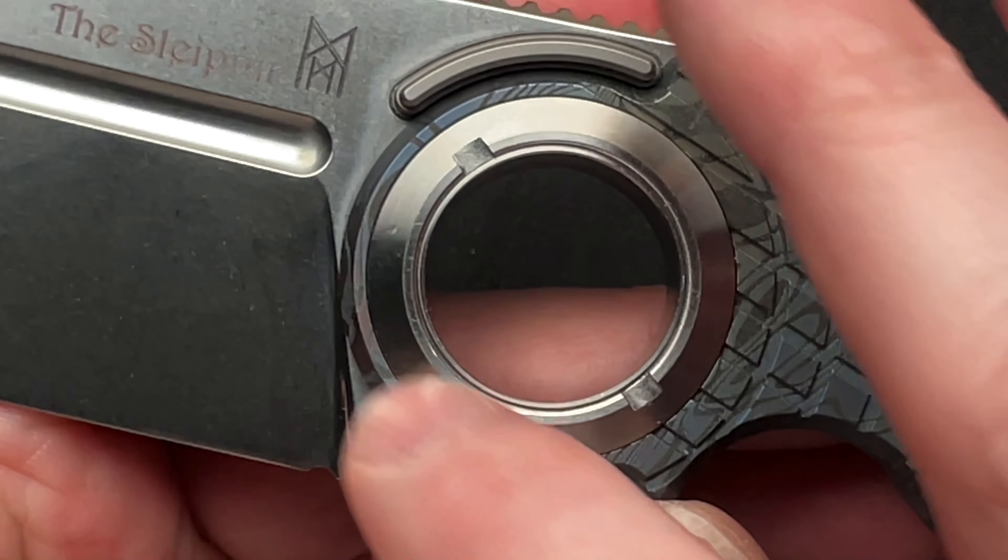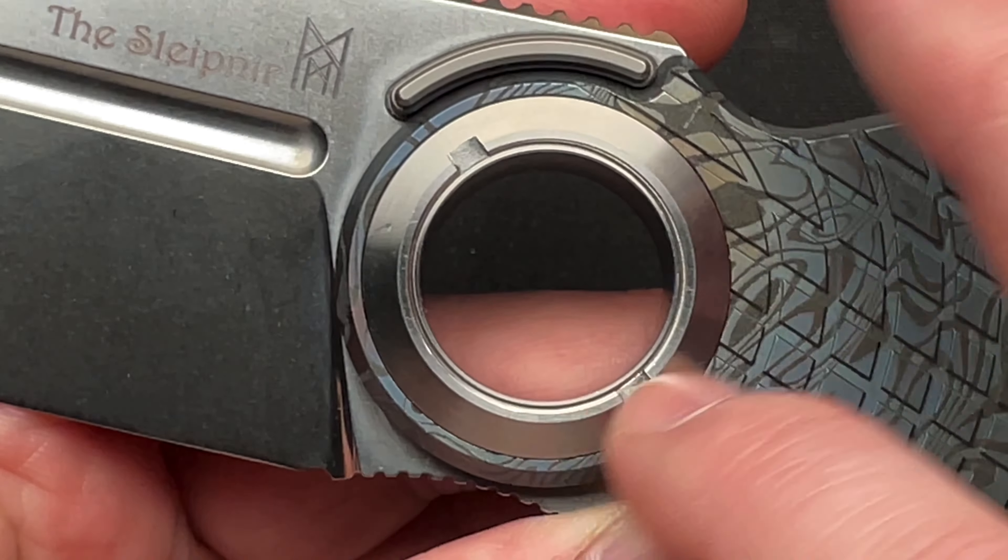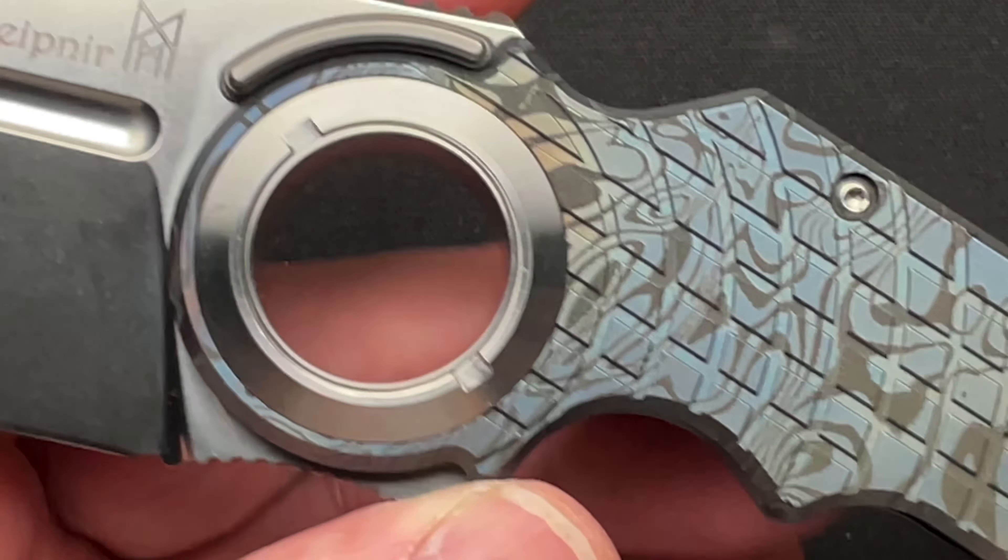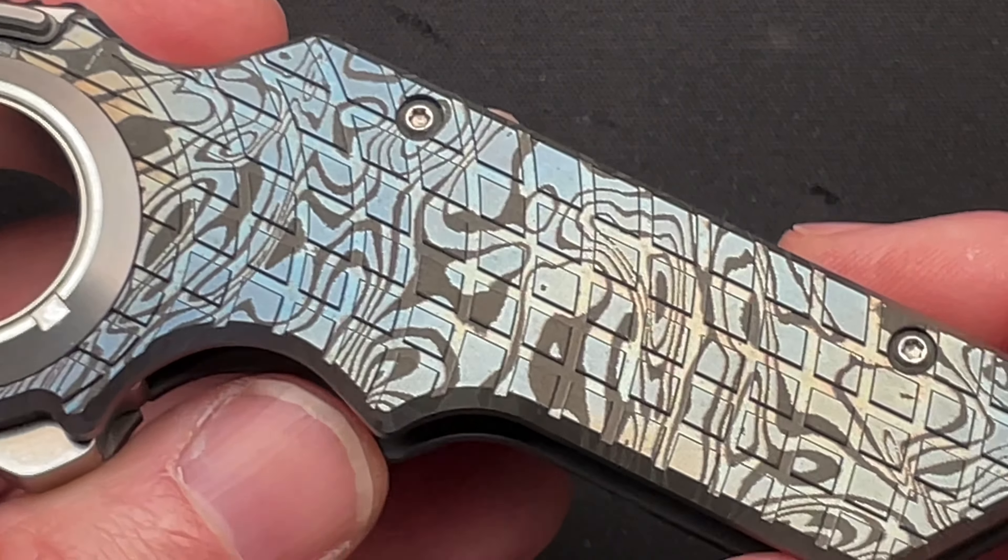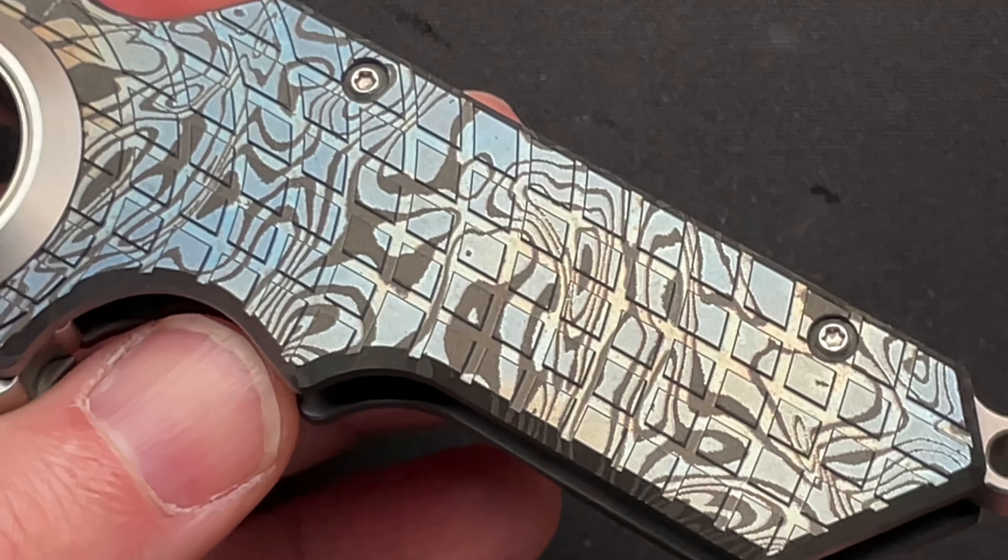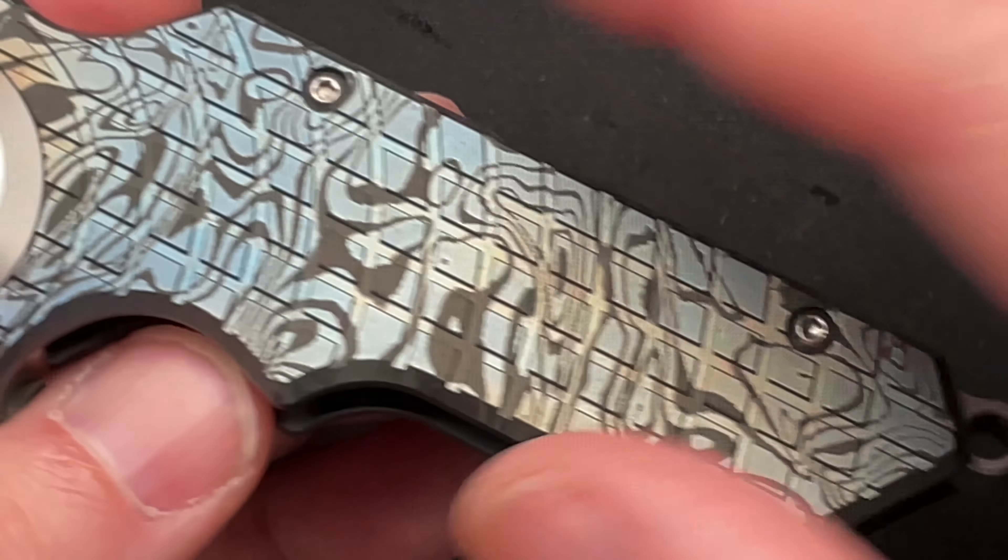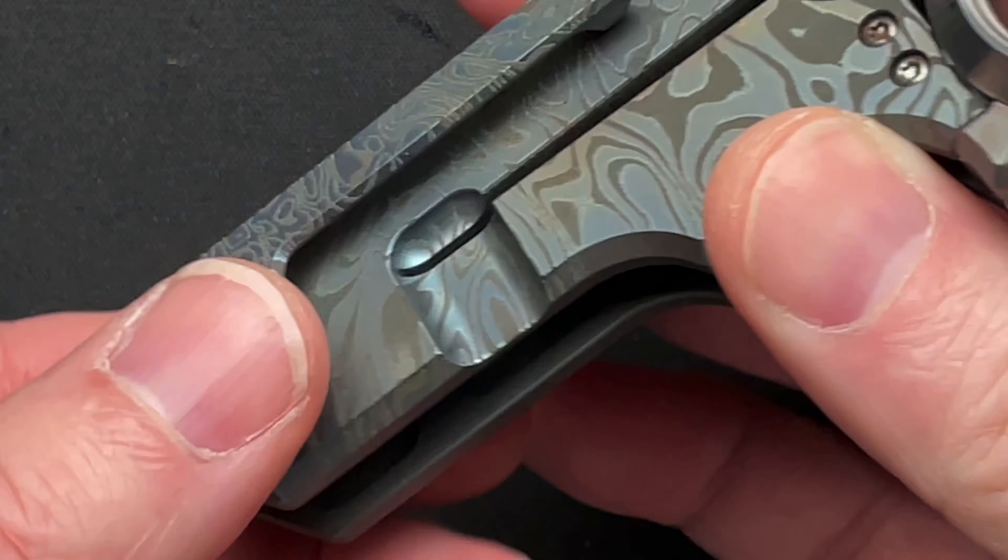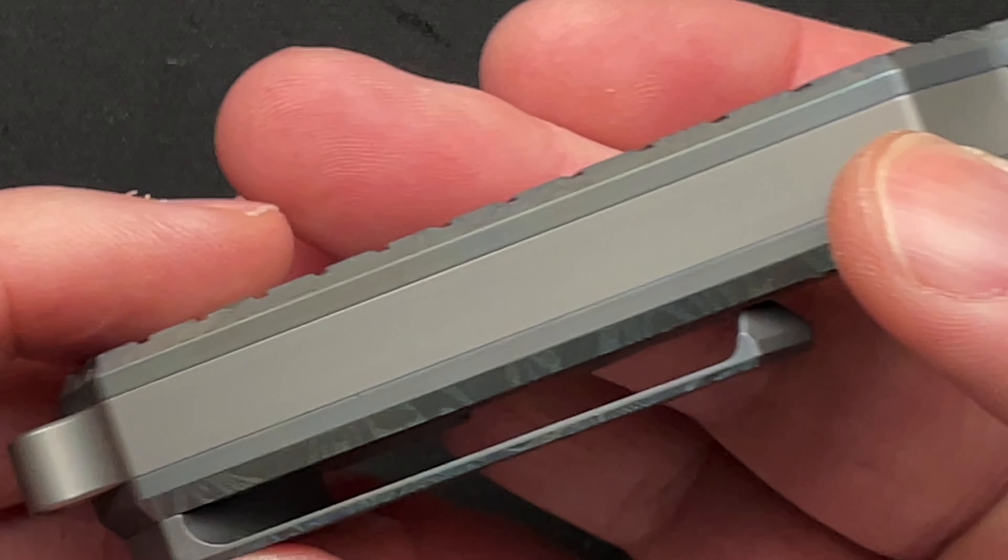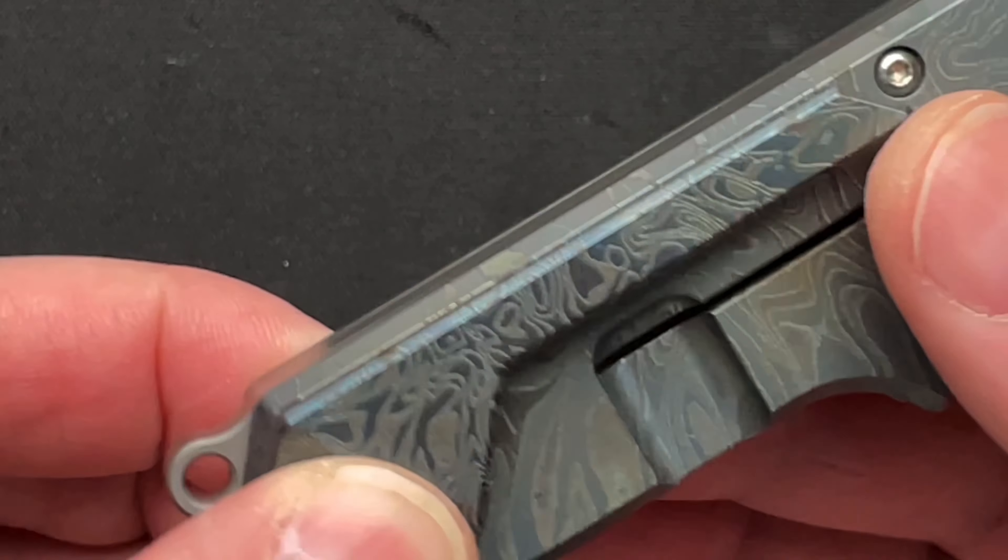Big, huge phosphor bronze washer in here on both sides. All titanium with just a pattern to make it look Timascus-ish. Titanium backspacer, like a big, huge, thick titanium backspacer with a lanyard hole.